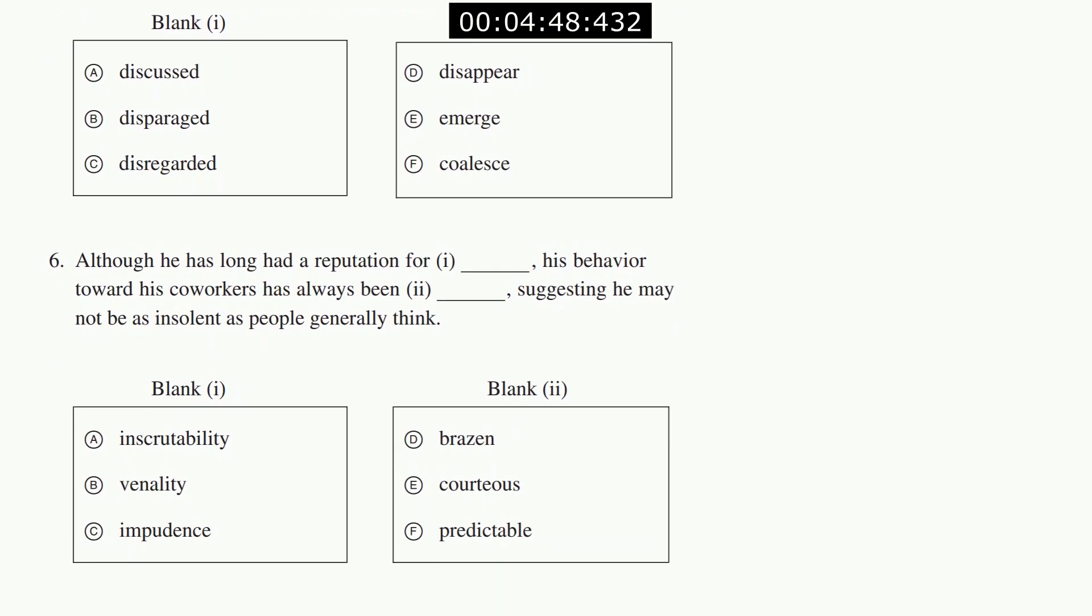Although he has long had a reputation for something, his behavior toward his co-workers has always been the opposite. But then let's read the ending for the giveaway: suggesting he may not be as insolent as people generally think. So I want a pair of words that suggests that he's not insolent, as in he's not rude. Long had a reputation for impudence, similar to insolence, but his behavior to all his co-workers has always been courteous. So those are the two opposites, the although giving away that we want an opposite, and then which opposite to pick we find out by the ending.